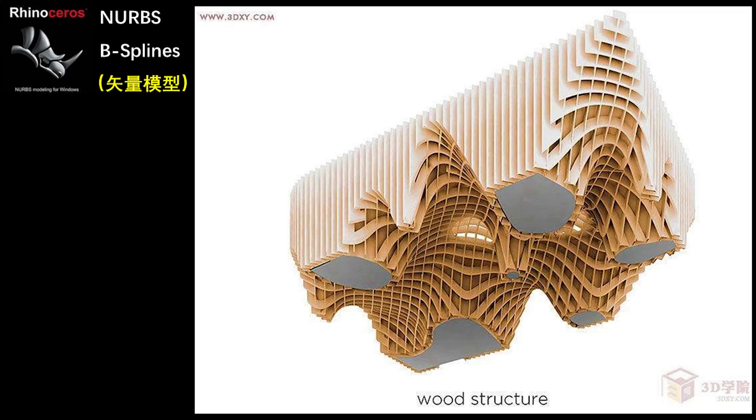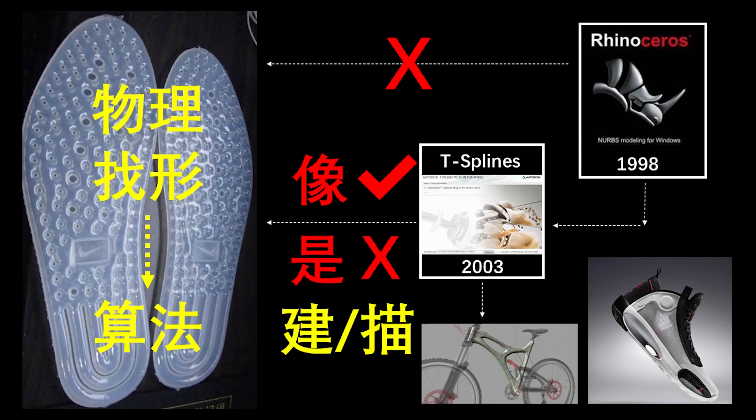龙骨这个概念也被直接用在建筑上：2014年米兰世博会的法国馆，就是直接用横纵相接的木块——即龙骨——插接出来的，室内效果非常漂亮。它的每一条曲线是通过B-Wrap切割曲面模型得到的。2003年T-Splines出现，我们可以在Rhino里开始做这样的拓扑曲面。